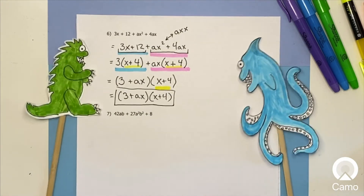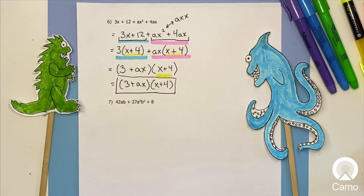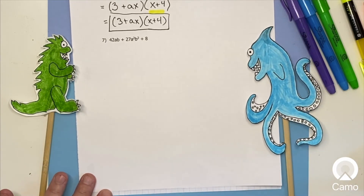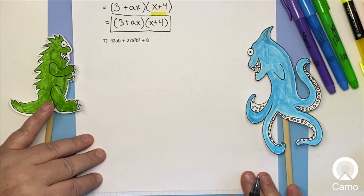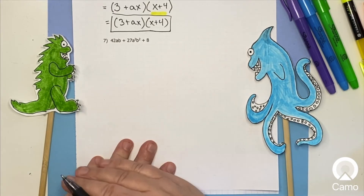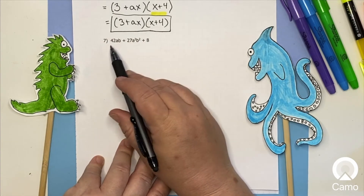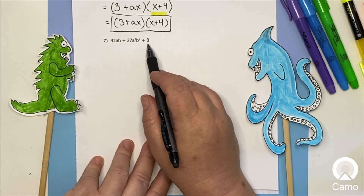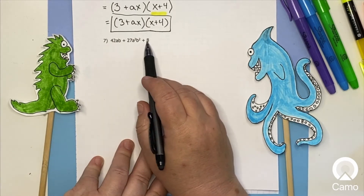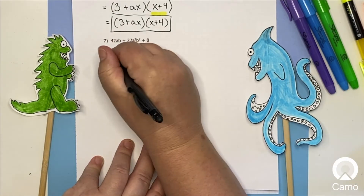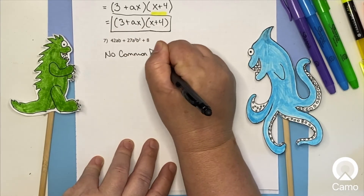Now on to number seven, which looks a little intimidating. First things first — always look to see if there's anything common. This one makes it easy because one term is just 8. There's no way to factor out an a or a b. Does 8 have anything in common with 42? Yes, 2. But does 2 go into 27? No, it doesn't. So there are no common factors.